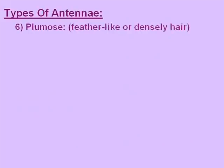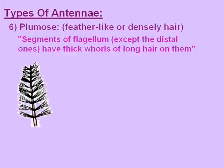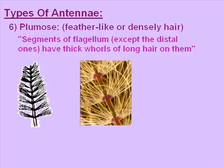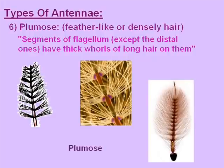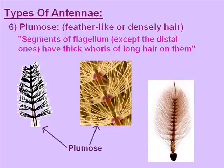The sixth type of antenna is plumose. Plumose means feather-like or densely hairy. The segments of the flagellum, except the distal ones, have thick whorls of long hairs on them. In the picture we can see that these antennae have thick whorls of long hairs except on the distal segments. The arrows are pointing towards the plumose antennae.